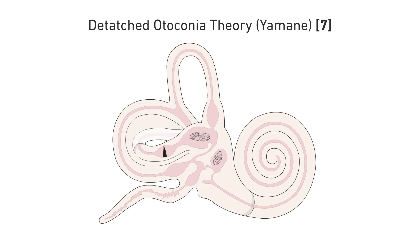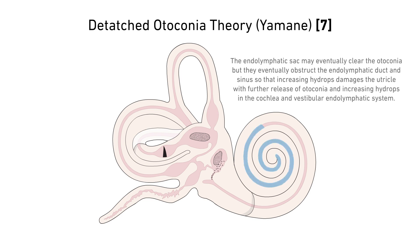The cause of the initial cochlear hydrops in Meniere's disease is unknown, but it could be initiated by detached otoconia from the saccule obstructing the reuniting duct. The hydrops moves into the saccule. As more otoconia are released from the damaged saccule, they move toward the utricle and then obstruct the endolymphatic duct, the vestibular aqueduct and proximal endolymphatic sac as it tries to clear the hydrops and the otoconia.